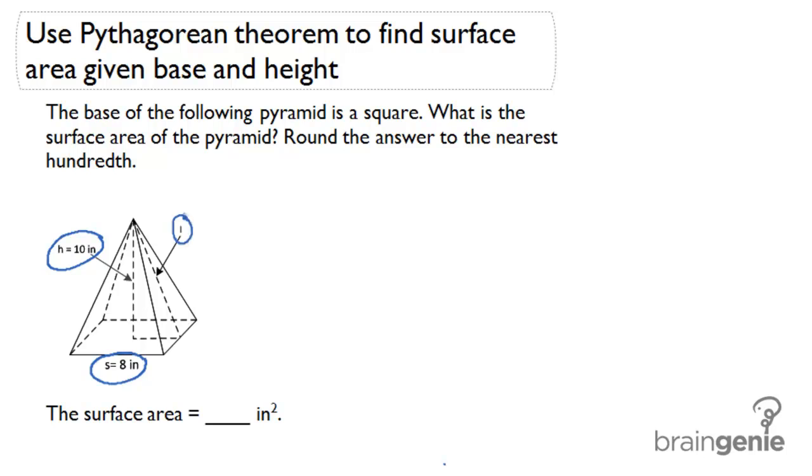But we are missing the slant height, and if we remember the surface area formula is s squared plus 2sl, which means we need the slant height in order to find the surface area.